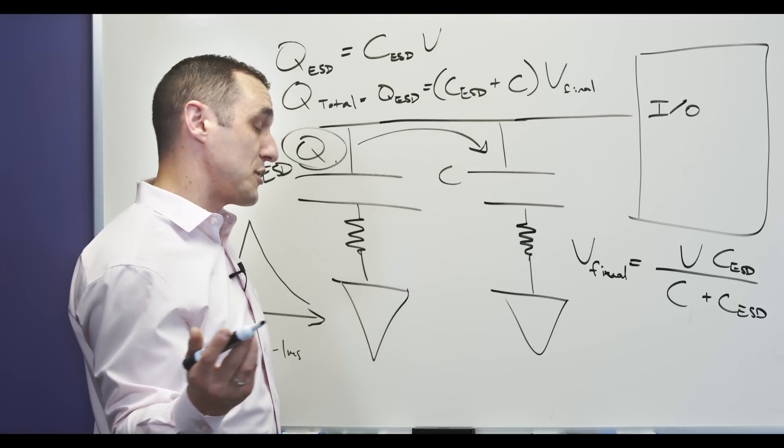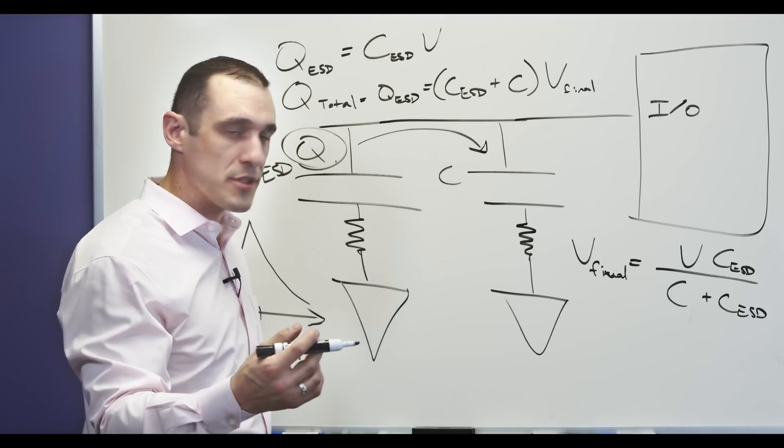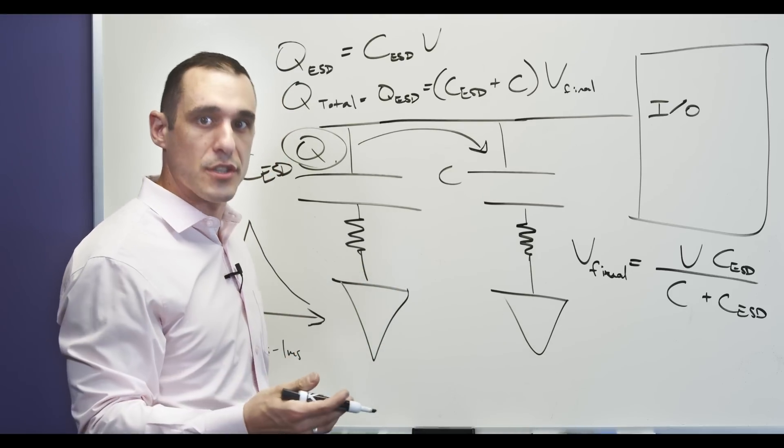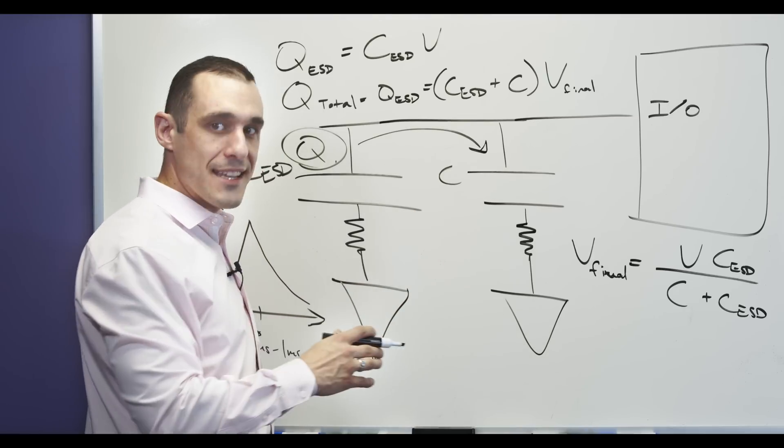This is why I think it's much better to just rely on TVS diodes, gas discharge tubes, and other forms of circuit protection like relays in order to protect your circuits from fault conditions and ESD conditions.